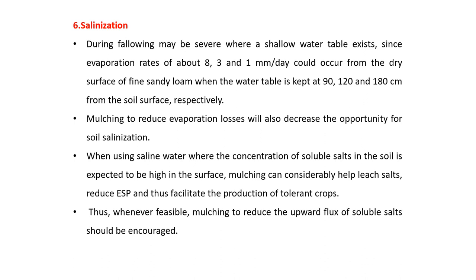During fallowing, salinization may be severe where a shallow water table exists, since evaporation rates of about 8, 3 and 1 mm per day could occur from the dry surface of fine sandy loam when the water table is kept at 90, 120 and 180 cm from the soil surface respectively. Mulching to reduce evaporation losses will also decrease the opportunity for soil salinization. When using saline water where concentration of soluble salts in the soil is expected to be high, surface mulching can considerably help leach salts, reduce ESP and facilitate the production of tolerant crops. Whenever feasible, mulching to reduce the upward flux of soluble salts should be encouraged.